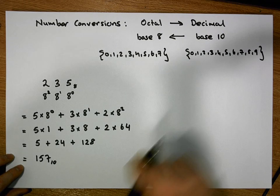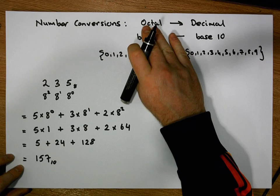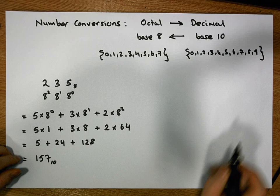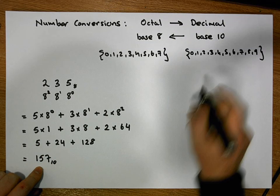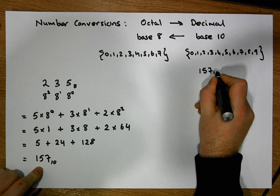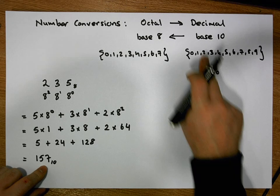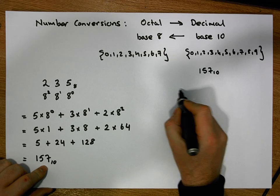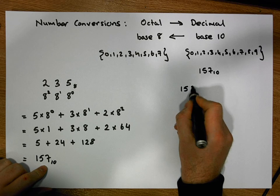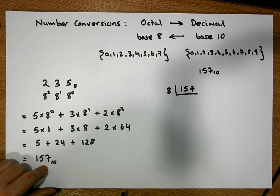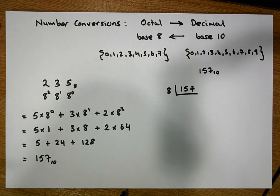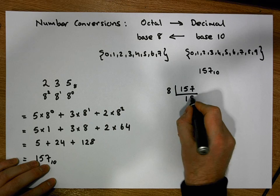Now let's concentrate on converting from decimal back to octal. To convert from decimal to octal, we take our decimal number — let's take 157 in base 10 — and we want to go to base 8. So we're going to successively divide 157 by 8, because 8 is the new base we want to convert into. 157 divided by 8 goes 19 times.